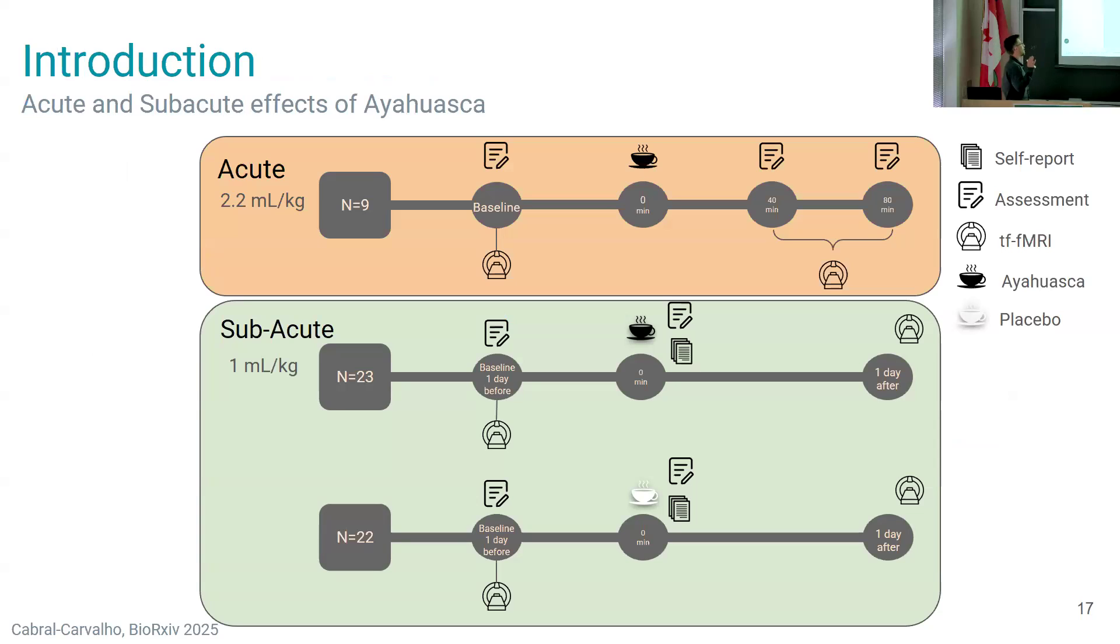We have two different datasets. One dataset is an acute dataset, which means that we have a baseline fMRI before the ingestion and also an fMRI after the ingestion during the acute effects. In the subacute group it's slightly different. We have now two groups: one group is a placebo and another group is the ayahuasca group. Here we have a baseline scan before and an fMRI scan one day after.